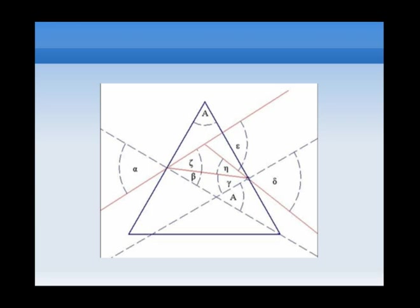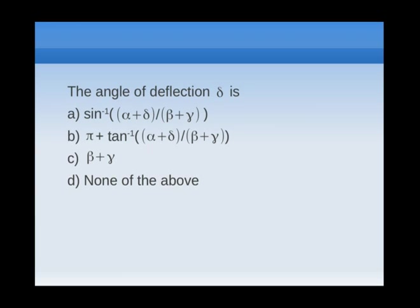But what happens if you let A go to 180 degrees, the prism starts to look like a parallel glass slab. And we all know that for a parallel glass slab, delta should be zero. So we cannot have both the options at the same time. So for A going to 180 degrees, γ+β is 180 degrees, which is a parallel glass slab, for which delta is zero. So that removes option C also.